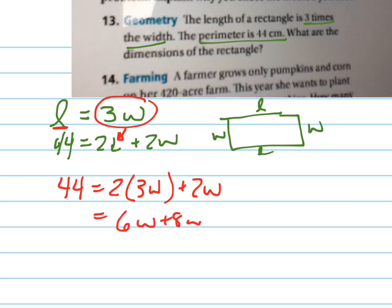6W plus 8W equals 44. Sorry, 6W plus 2W equals 44. I was getting ahead of myself there. Which means 8W equals 44.